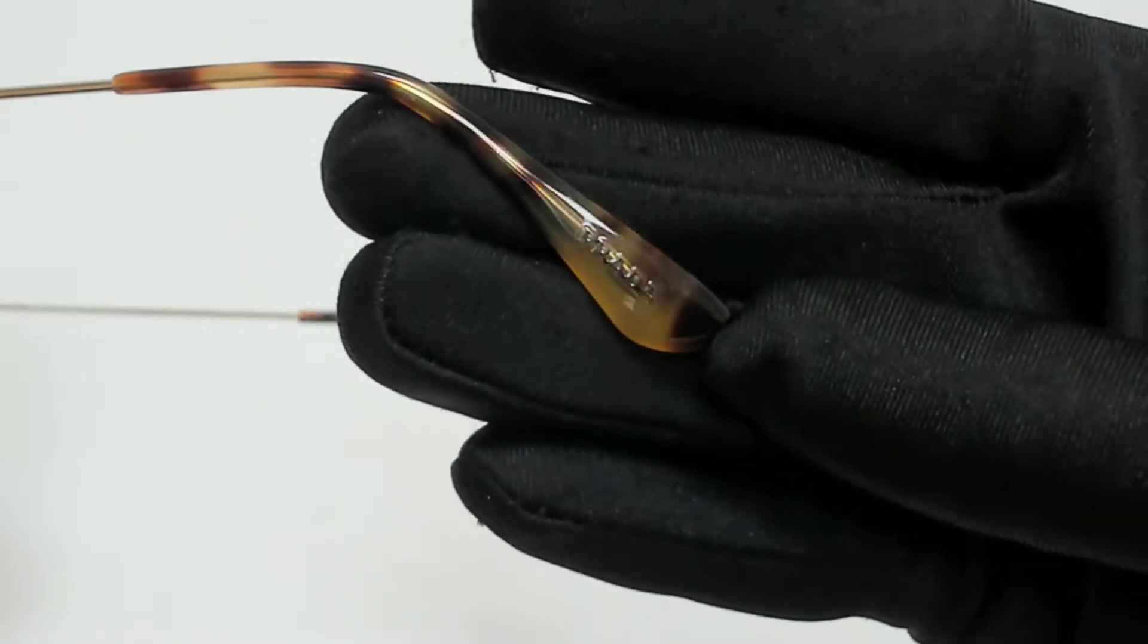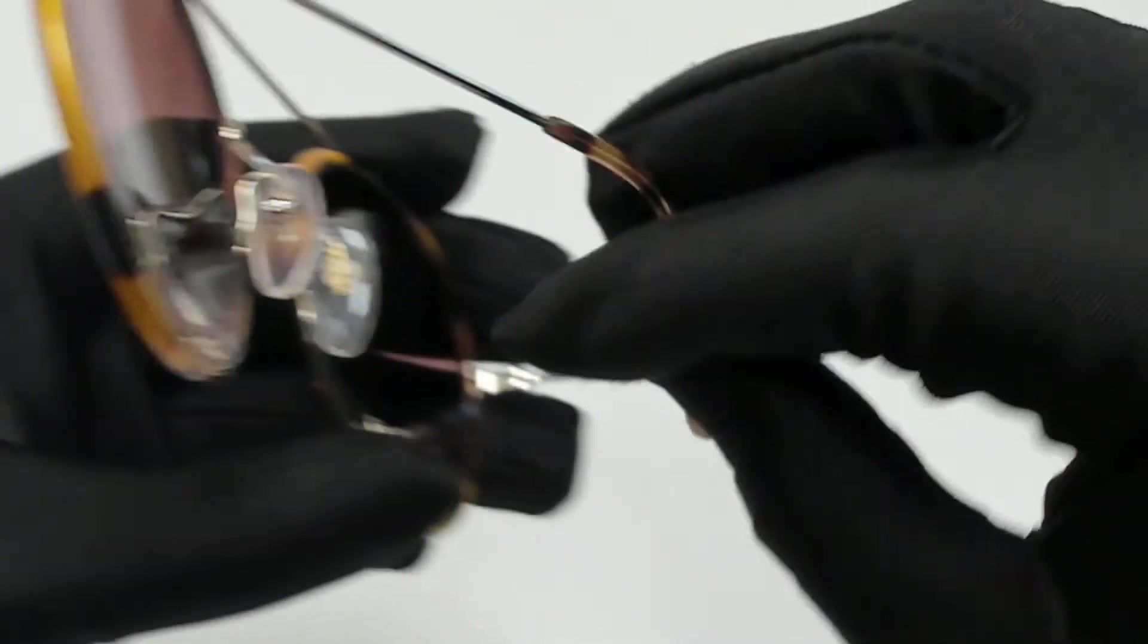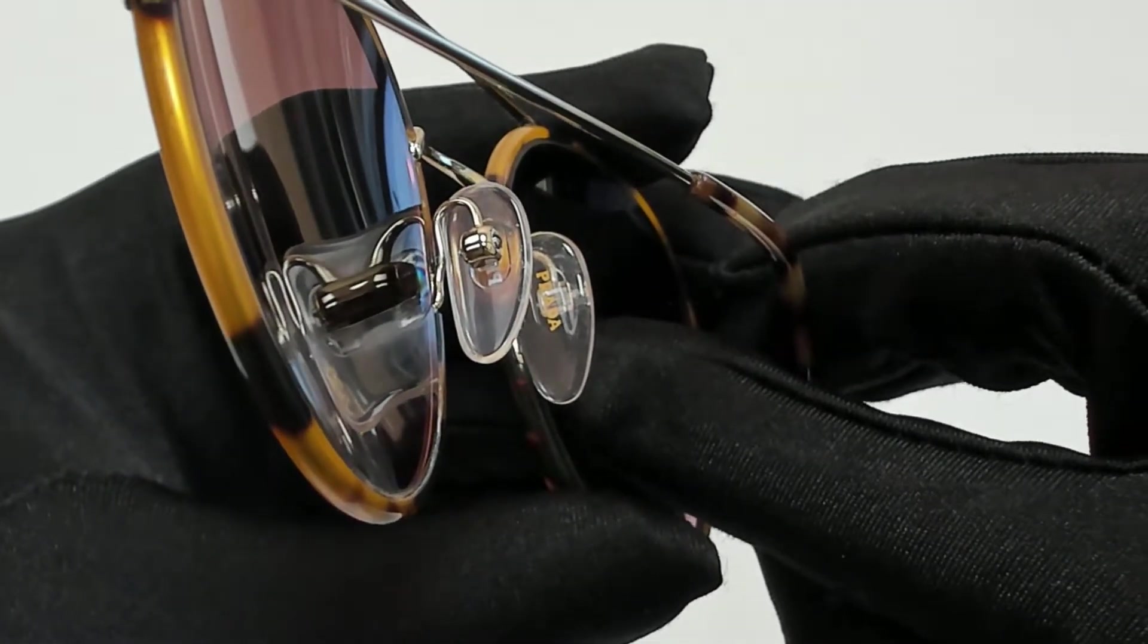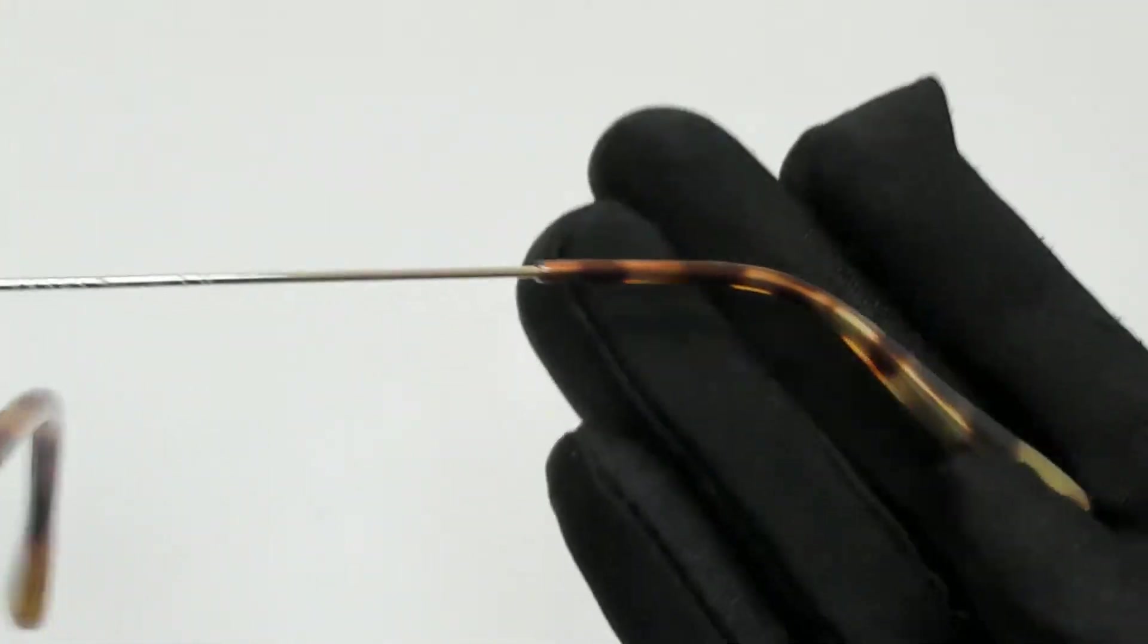On its temple tips, you'll find the Prada logo, and it can also be found on its nose pads. It's made in Italy.